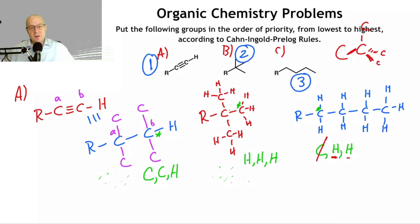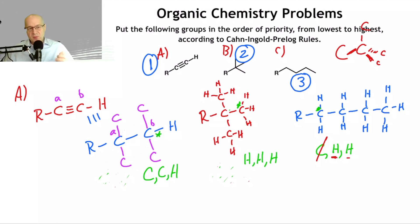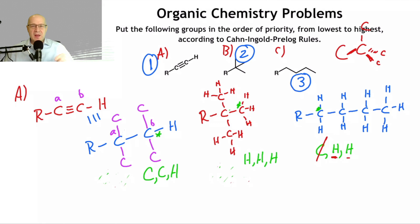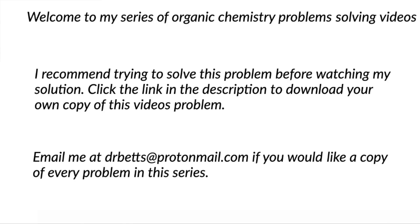That's how you apply Cahn-Ingold-Prelog rules for multiple bonds versus branching. If you hadn't used this tool that Cahn-Ingold and Prelog provide, you probably wouldn't have gotten the right answer — so always use that tool when working with multiple bonds. I hope you found this video helpful. If you did, slap that like button, leave a comment below, and please consider subscribing. Share my content with others who may be struggling with organic chemistry — we can all get through this together. Good luck and good chemistry. Email drbets at protonmail.com if you'd like a copy of every problem in this series.